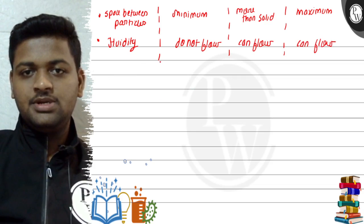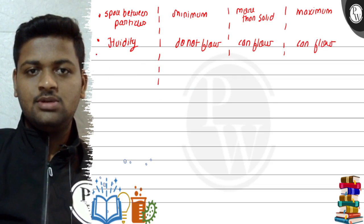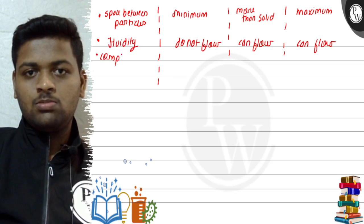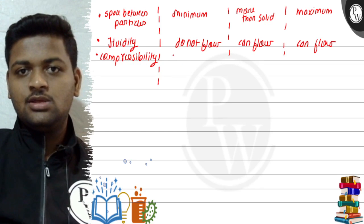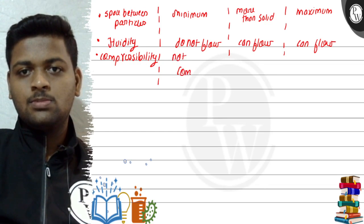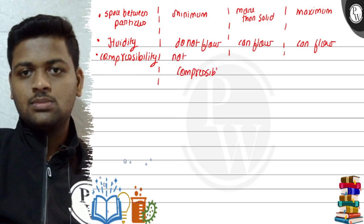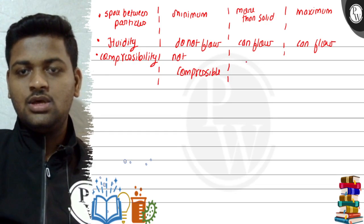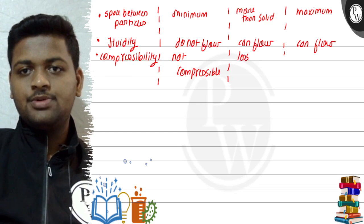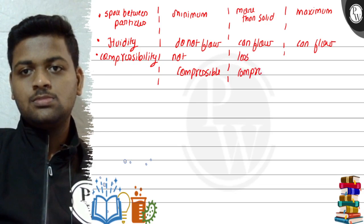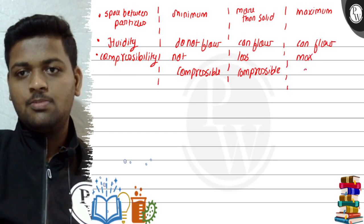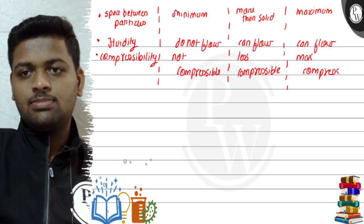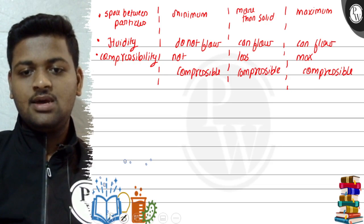Now we will talk about compressibility. If we talk about compressibility, solids are not compressible. Liquids are also not compressible. And gases are maximum compressible. So this is Part A.